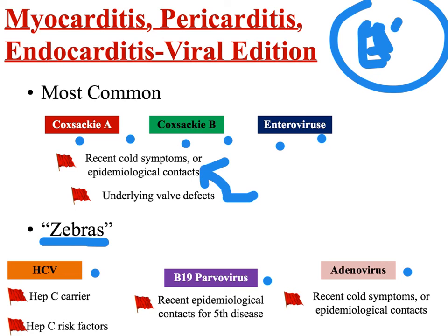If you think your patient has hepatitis C viral carditis, this is important to know because hep C actually has antiviral drugs that can be used to treat it. Risk factors here are a patient you know is infected with hepatitis C, or a patient with hep C risk factors — any kind of bloodborne contact or possibility for bloodborne transmission. That would include hep C carriers as long-term sex partners — not a common sexually transmitted route, but possible with repeated contact. The biggies are needle use: tattoo needles and IV drug use.